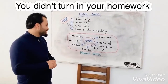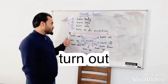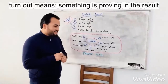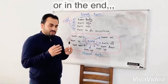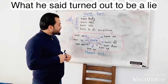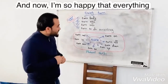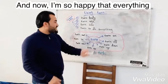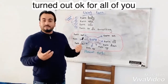The last one is 'turn out'. Turn out means something is proven in the result or in the end. For example, 'What he said turned out to be a lie.' I'm so happy that everything here turned out to be okay for all of you.